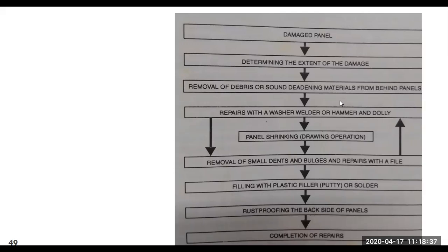For a damaged panel, you first need to assess or determine the extent of the damage. Once done, you need to remove debris or sound deadening material from behind the panels. Debris refers to dirt, clay, sand, or any broken parts that might be attached to the panel — in case of an accident, interior broken parts from the vehicle can also count as debris.